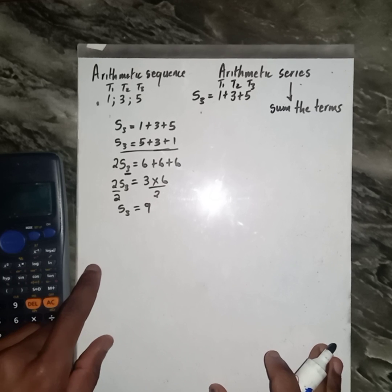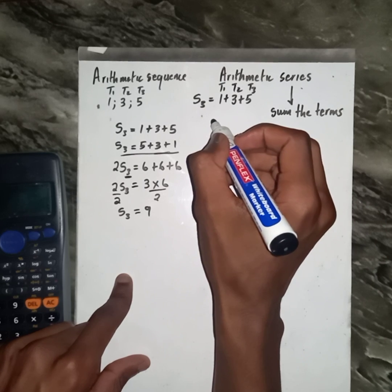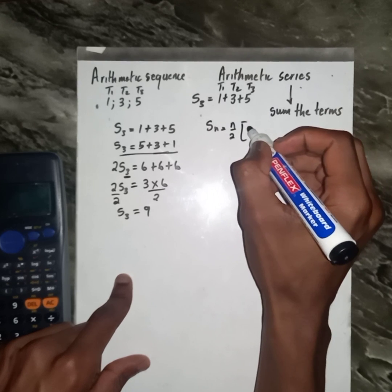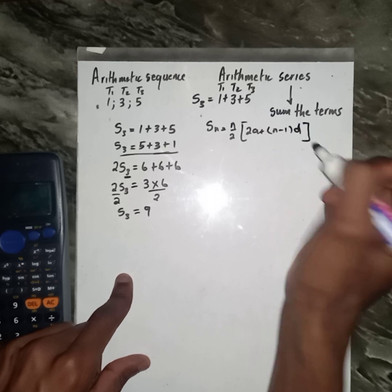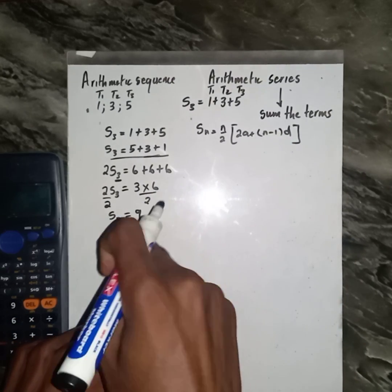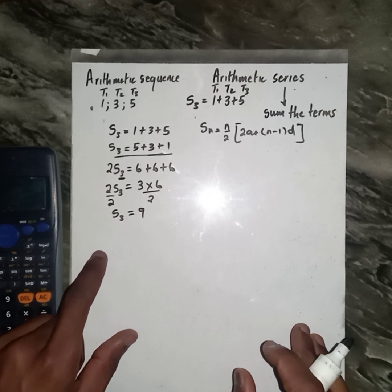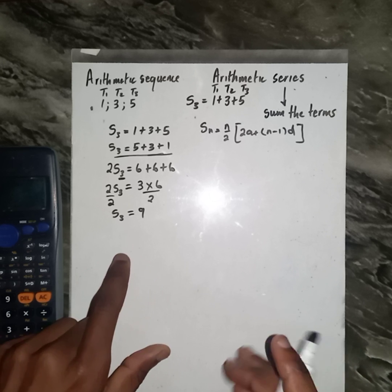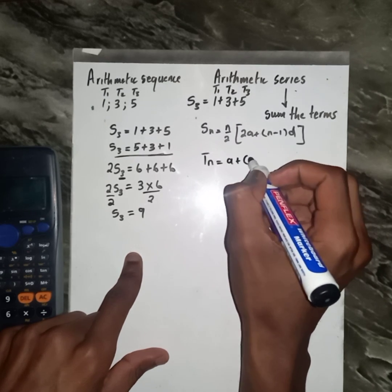But now, we do have the arithmetic series formula, which is given by Sn, which is n over 2, times 2a plus n minus 1 times d. We are going to prove this formula using this method. It's so simple. For us to prove this formula, we just need to familiarize ourselves with it.